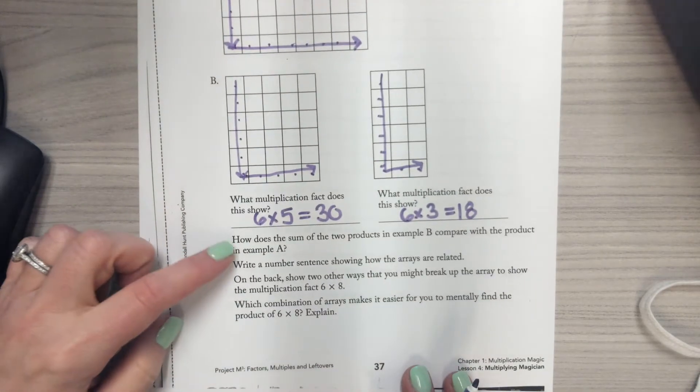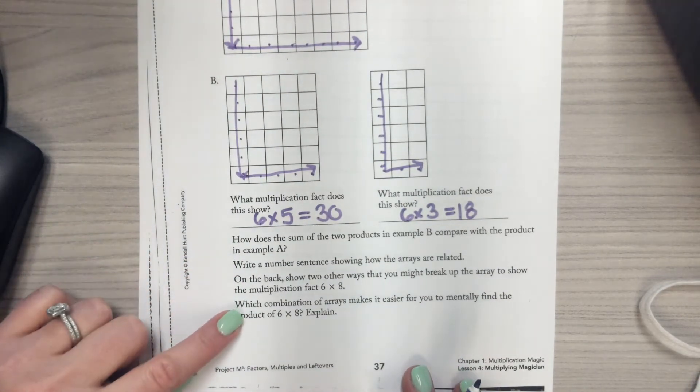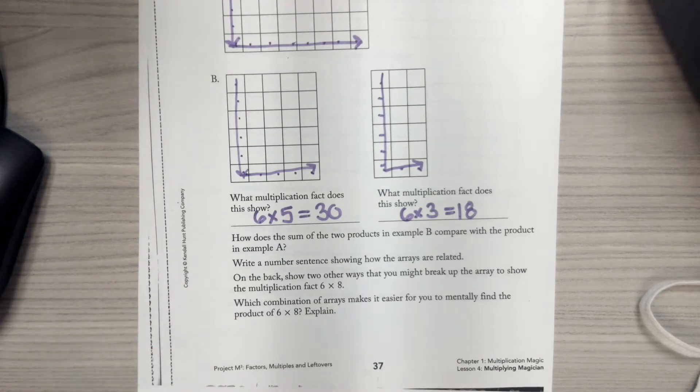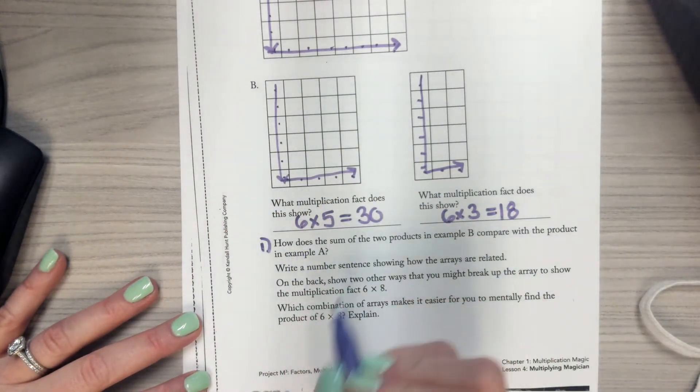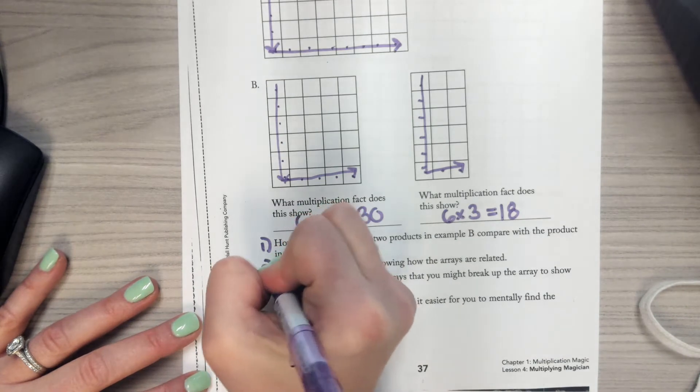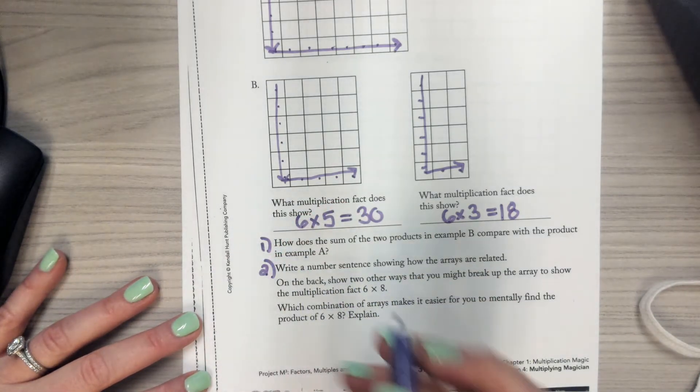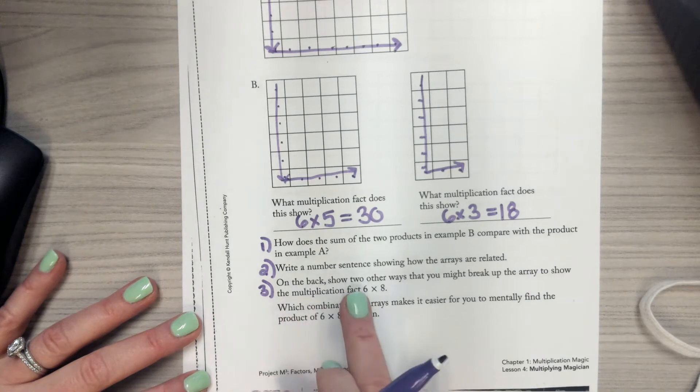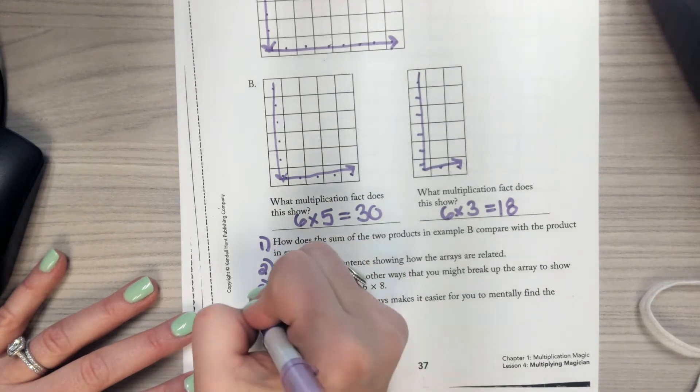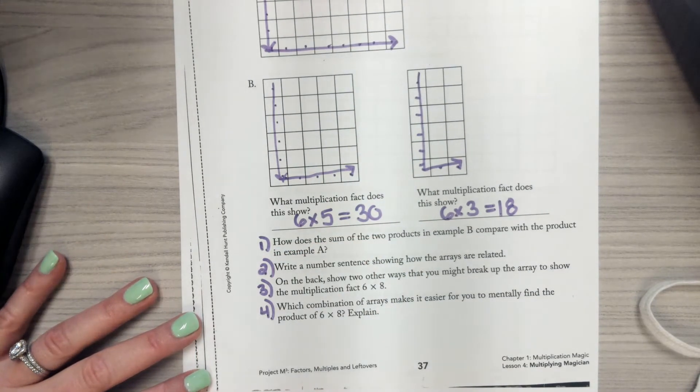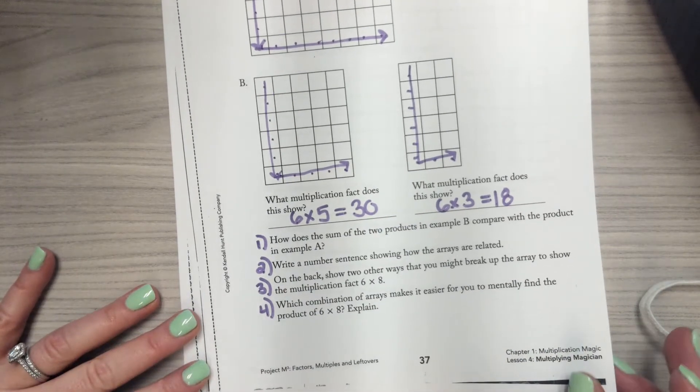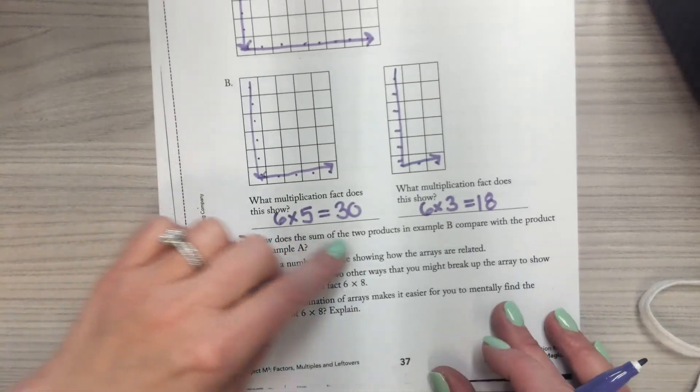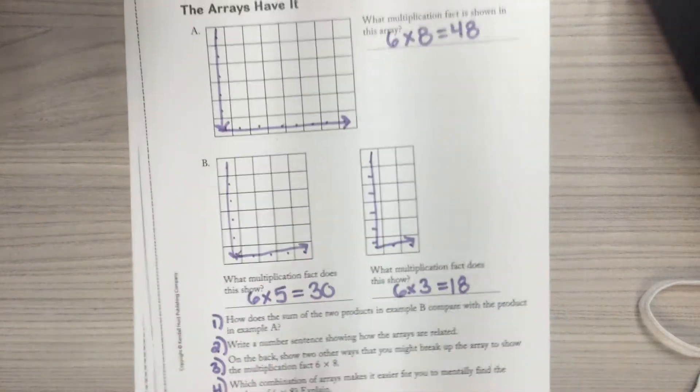Now there are one, two, three, four questions here. But for me, there's not a lot of space to answer them. So I'm going to number them. I'm going to number them question one, question two for write a number sentence, question three for on the back, and then question four, which combination of arrays? I think I can fit number one right here.